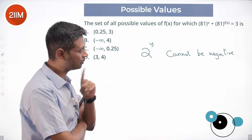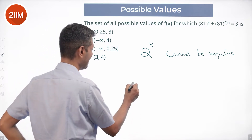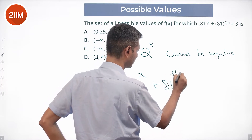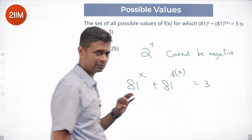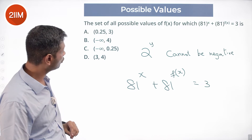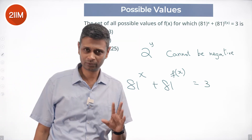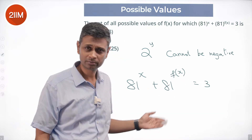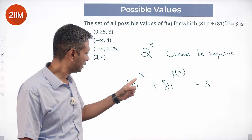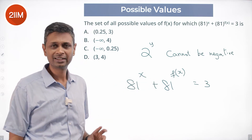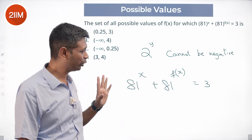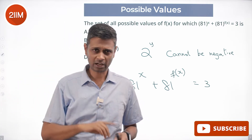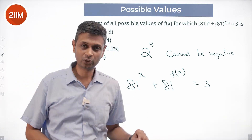So this question therefore — it's a wonderful question — which is: 81 power x plus 81 power f of x equals 3. We want to find the set of all possible values of f of x. If x went to 0, 81 power x equals 3: since 3 power 4 is 81, x can be 0.25. But we are not worried about x — we are talking about f of x.